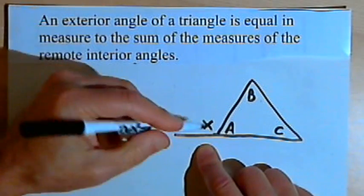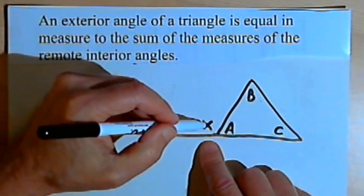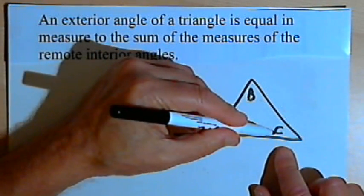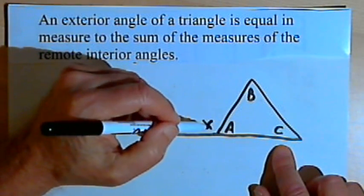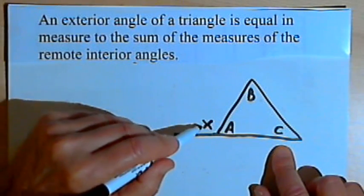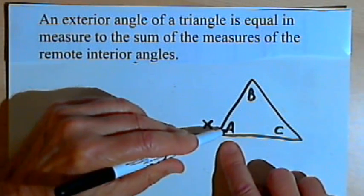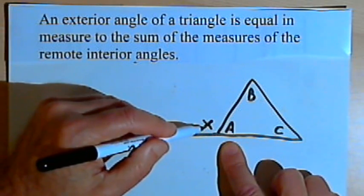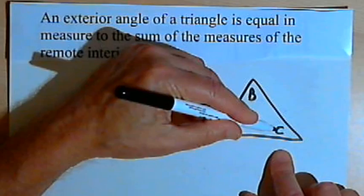This theorem says that the measure of angle x, the size of angle x, is equal to angle b plus angle c. Angles b and c are what we call remote interior angles. They're remote from this exterior angle. They're far away from it. Angle a is not remote. Angle a is adjacent. So the measure of angle x is supposed to be equal to the measure of angle b plus the measure of angle c.